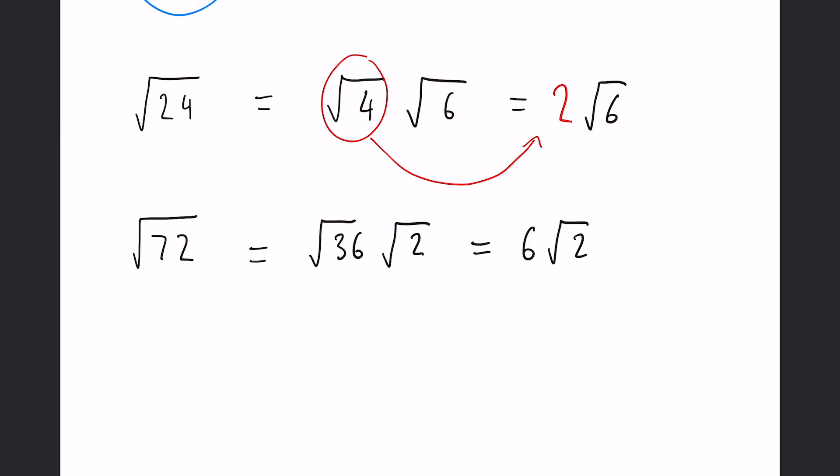You can see here that if we were to go with, for example, the square root of 9 and the square root of 8, this is also a viable method. It does also make 72. However, because it's not the biggest one, it's not going to simplify it fully. So we can write this as 3√8.